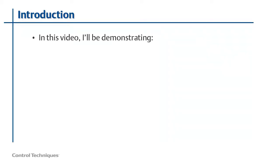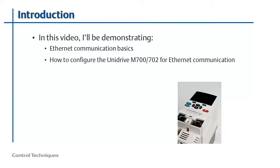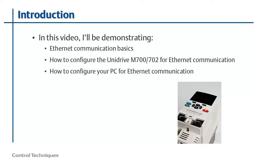In this video, I'm going to demonstrate how to configure a Unidrive M700 for Ethernet communications. We'll begin with some Ethernet basics, and then I'll show you how to use the keypad on the drive to access slot 4. Once the drive is set up, I'll show you how to configure the Ethernet adapter on your PC so that you can communicate with the drive using mConnect software. So if you're ready, let's get started.